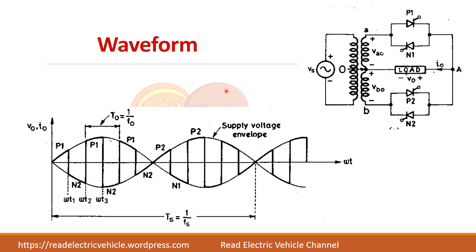Summarizing the waveform: during the positive half cycle, P1 and N2 are turned on alternately — P1 on, then N2 on (current negative), then P1 on again, then N2 on, and so on. This is repeated throughout the positive half cycle. During the negative half cycle, P2 and N1 are alternately turned on and off in the same manner.